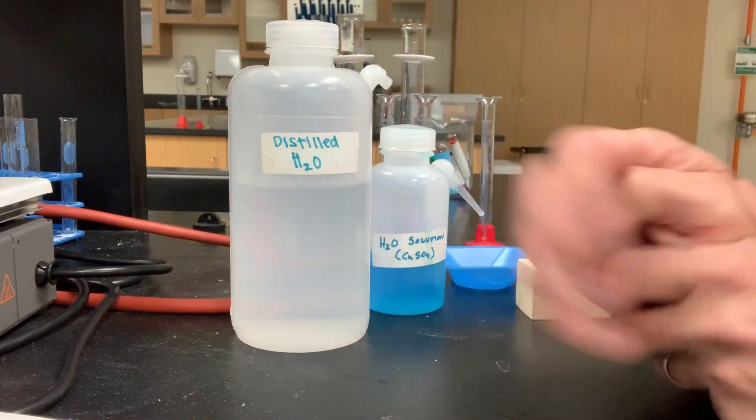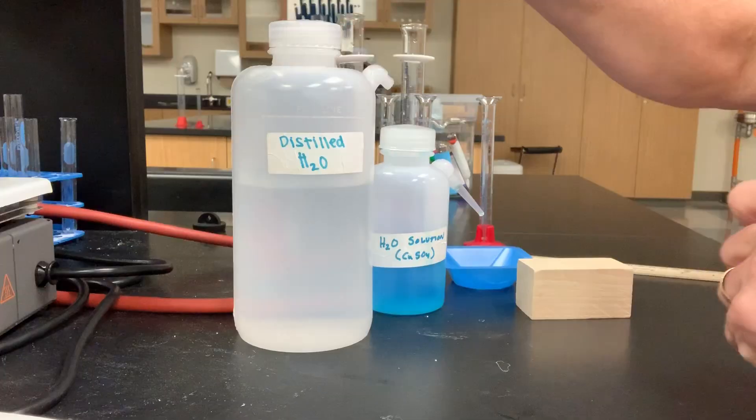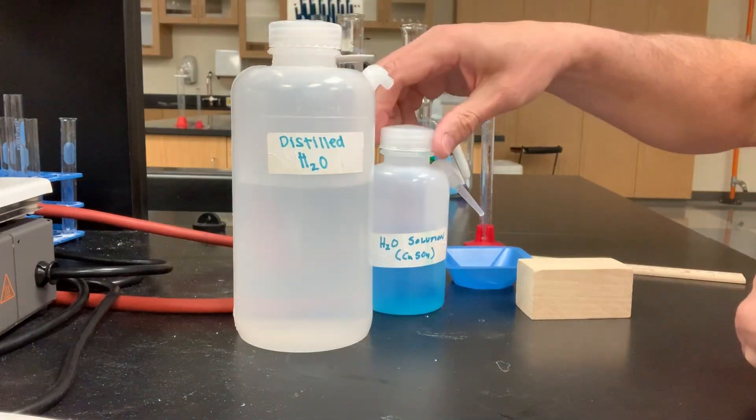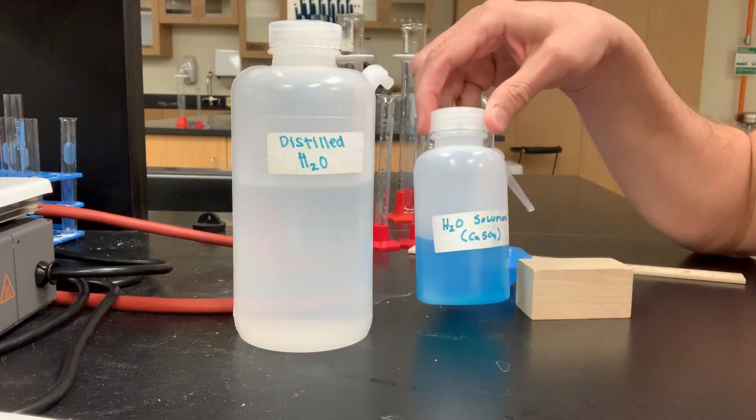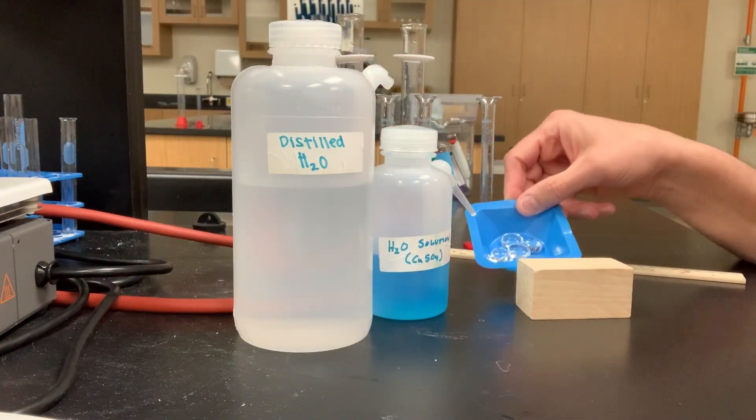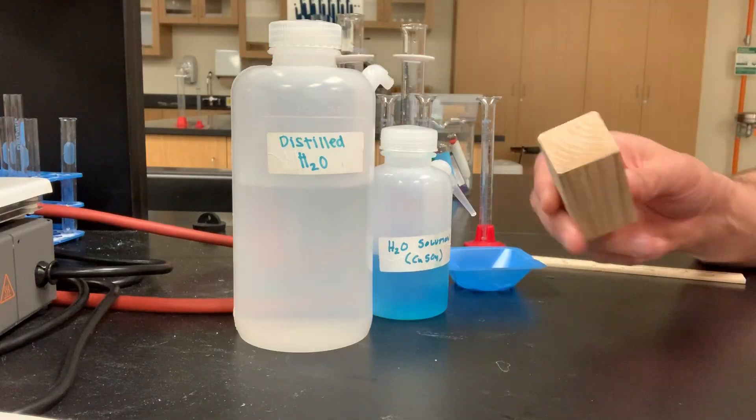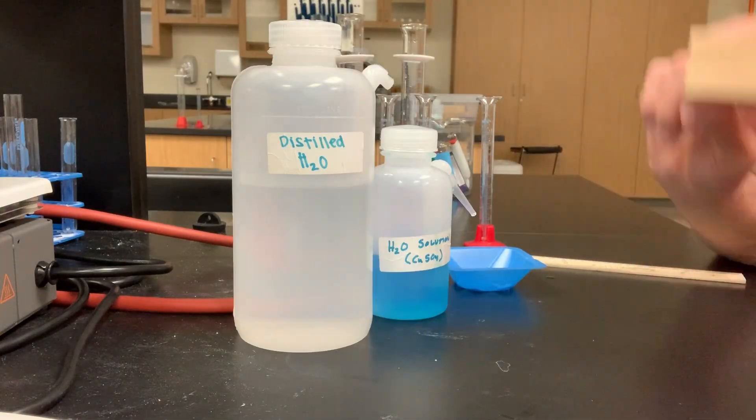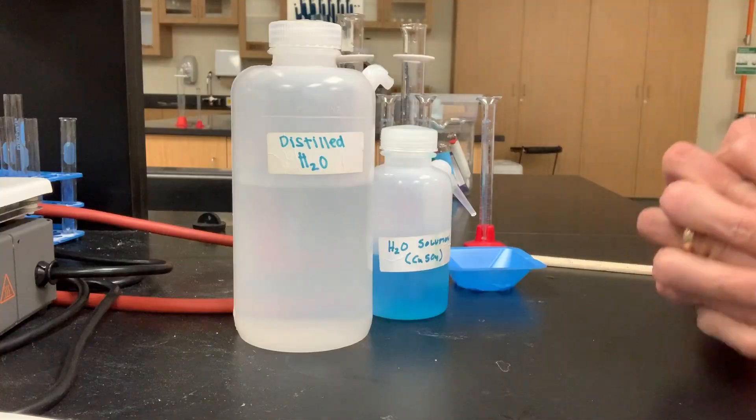We're going to find the density of four different things: a sample of distilled water, a sample of some blue salt water, some glass beads. We'll find the density of those glass beads today, I hope, and a nice pretty block of wood. So let's just get right to it.